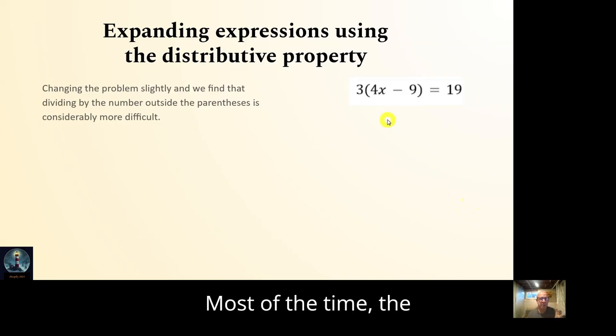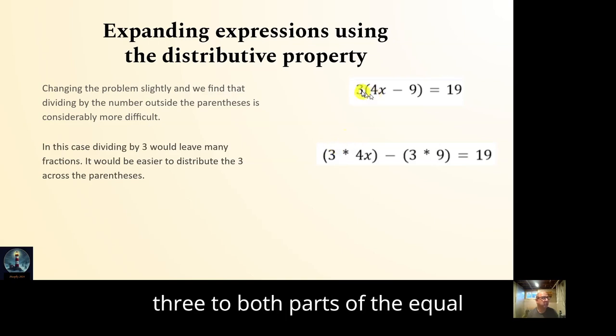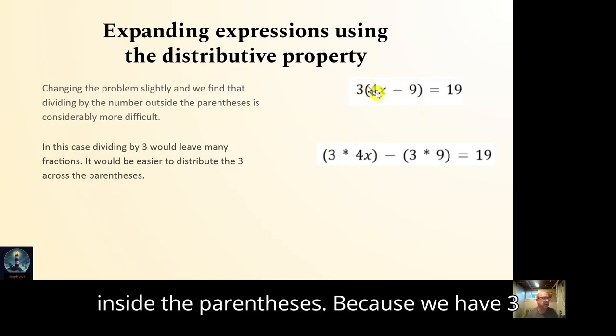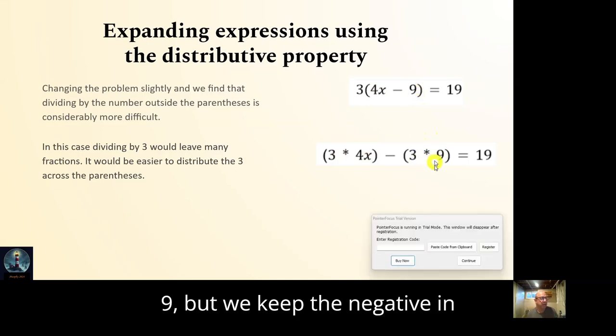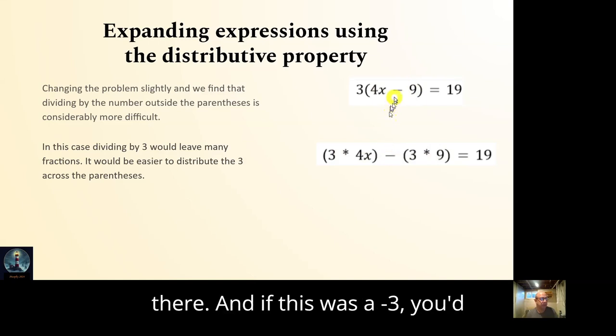Most of the time, the solution of dividing by this number outside the parentheses doesn't work. Like 19 divided by 3 is 19 over 3. It's 6 and two-thirds. It's not nice. So what we can do is distribute the 3 to both parts inside the parentheses. Because we have three 4x's, that's 3 times 4x. Because we have three 9's, that's 3 times 9. But we keep the negative in there. And if this was a negative 3, you'd multiply by negative 3. But we don't have to do that on both sides because we're not changing anything. We're just distributing the 3 that's already there.